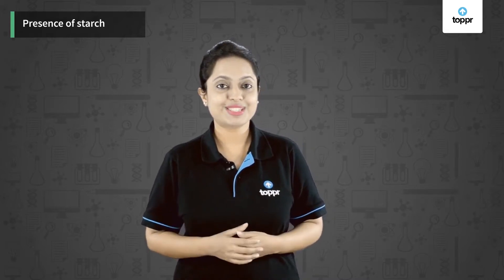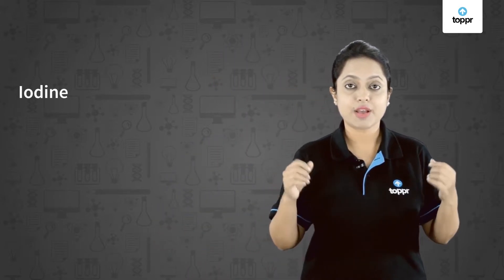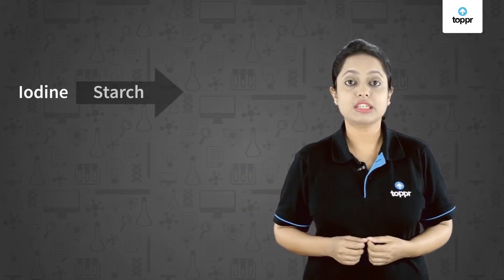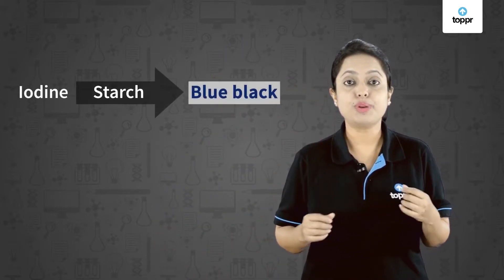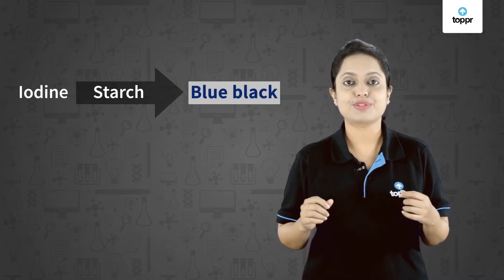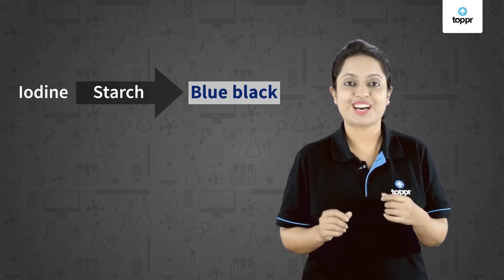Now let's do some experiments to see the presence of starch in plants. In these experiments we will use iodine solution to confirm the presence of starch, as iodine solution turns blue-black in the presence of starch.